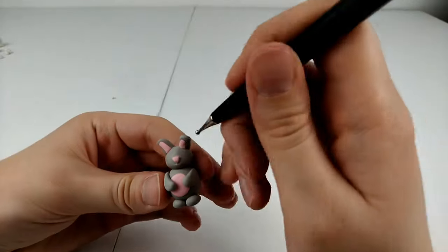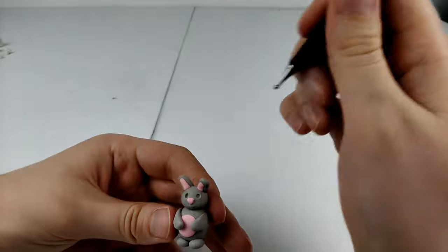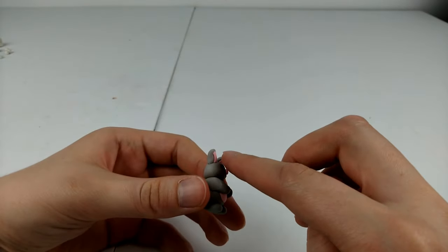Now I'm just going to make some indents for the eyes. You could use a sculpting tool or even a bobby pin and then we'll roll out small balls of black clay to put in.